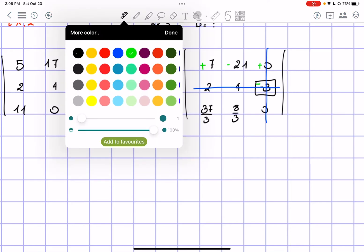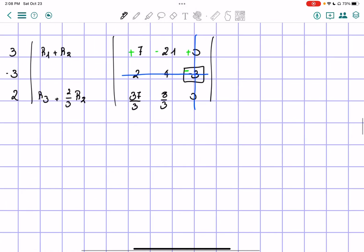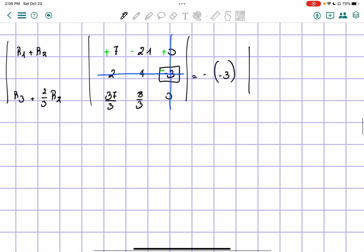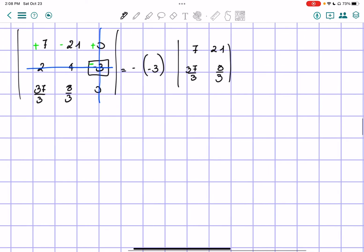So we have negative from the sign, negative 3 which is the number, and then the other matrix remaining is 7, 21, 37 over 3, 8 over 3. This one can simply solve.